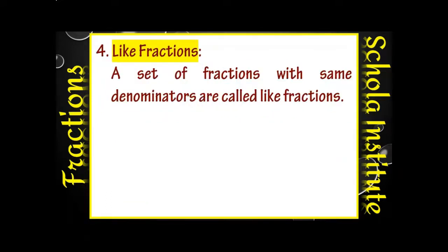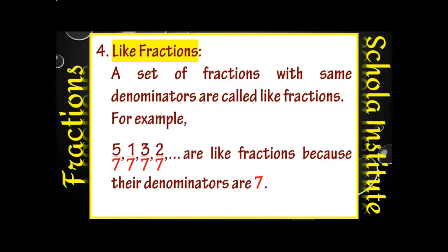Next है like fractions — यह सबसे आसान है। A set of fractions with the same denominators। अगर 2, 3, 4, 5 fractions दिये हैं और सबकी denominators same हैं, then this set of fractions is known as like fractions। Example: 5 by 7, 1 by 7, 3 by 7, 2 by 7 are like fractions because their denominators are all 7 — सबका denominator same है।